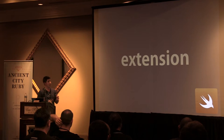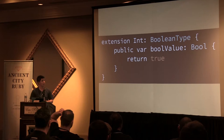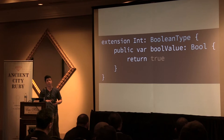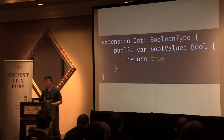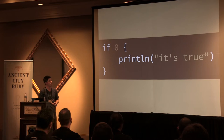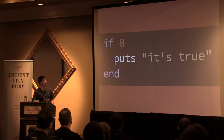Here's an extension in Swift: using the extension keyword followed by the type we're extending — integer in this case — and then optionally a list of protocols this extension is adopting. The BooleanType protocol requires a public property named booleanValue. We return true, because we want Swift integers to behave like Ruby integers where all integers are truthy in nature. With this extension, we can now use an integer as a Boolean in an if statement. The Ruby and Swift examples are very similar with just some syntactic differences.